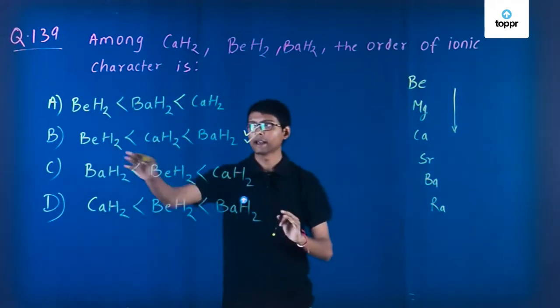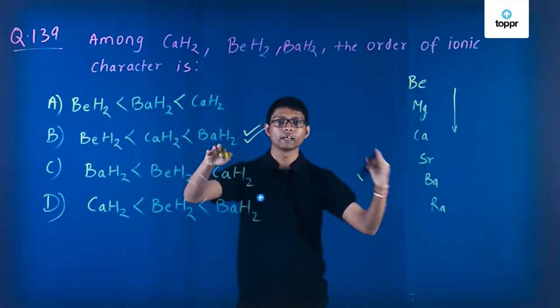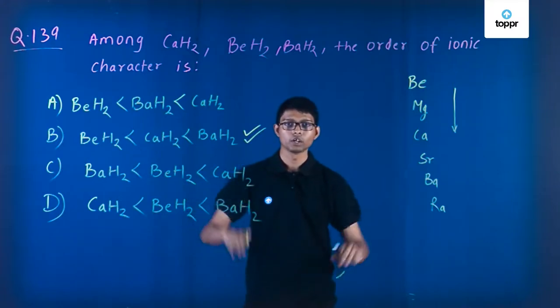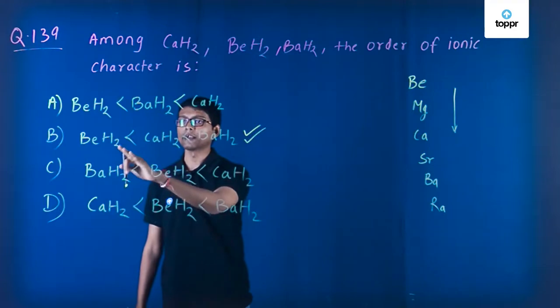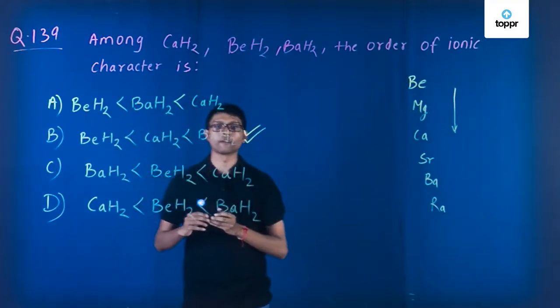According to this phenomenon, beryllium should have more ionic characteristics and barium should have low ionic characteristics because it is at the bottom of the periodic table. So the correct answer is option B, where beryllium hydride will have greater ionic characteristics and barium hydride will have less ionic characteristics.